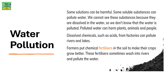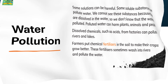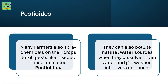Farmers put chemical fertilizers in the soil to make their crops grow better, but these fertilizers sometimes wash into the rivers and pollute the water. Many farmers also spray chemicals on their crops to kill pests like insects — these are called pesticides. They can also pollute natural water sources when they dissolve in rainwater and get washed into rivers and seas.